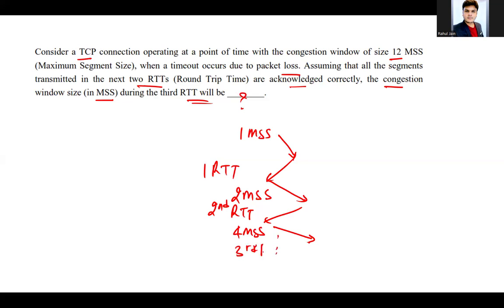Now you know that the congestion window size here is 12 MSS, so the threshold will occur at cwnd divided by 2, that is 6 MSS.